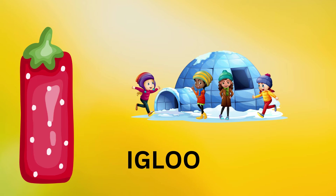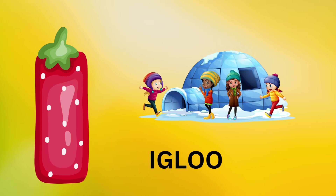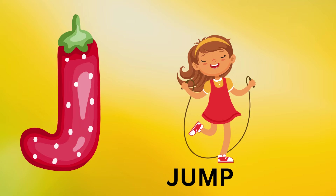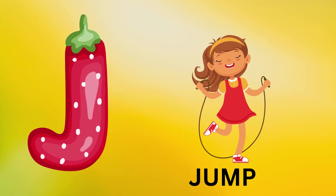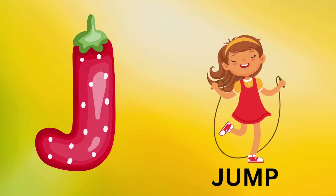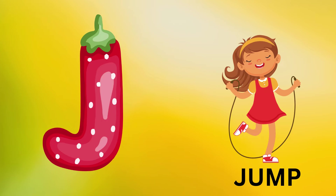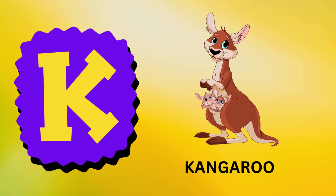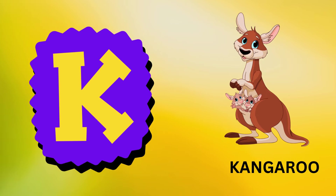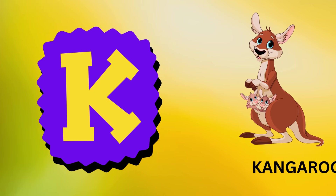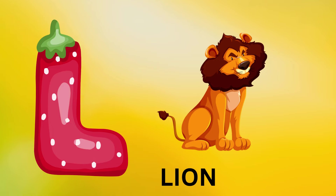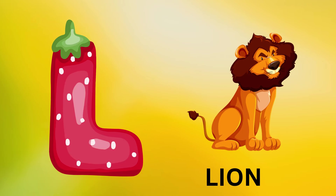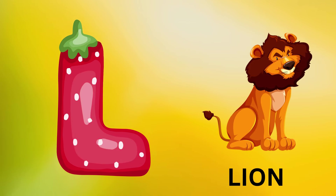I is for igloo, i-i-igloo. J is for jump, j-j-jump. K is for kangaroo, k-k-kangaroo. L is for lion, l-l-lion.